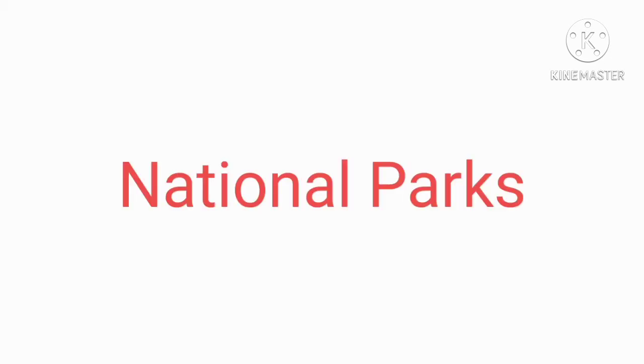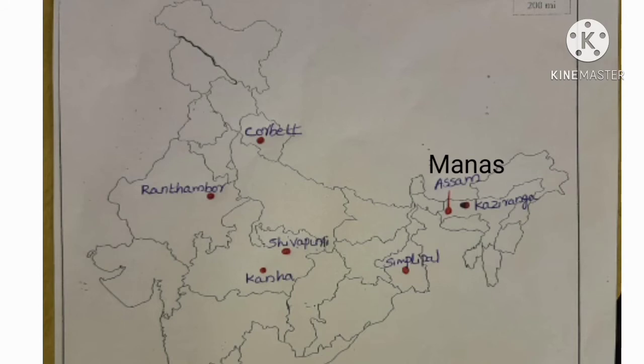Let us locate national parks on the map. First one, Corbett National Park — it is the largest national park in India and is located in Uttarakhand. Next, Kaziranga National Park is located in Assam. Manas National Park is also located in Assam. Can you see Manas and Kaziranga National Park on the map?